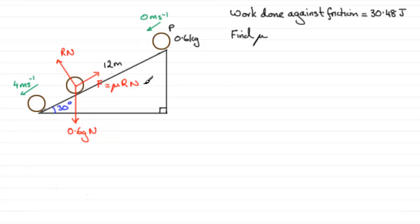So essentially what we're going to do, just to give you an overview here so that you might want to pause the video and carry on with the problem, but essentially what we're going to look at is that the work done by the friction here is going to be the force times the distance, μR times the distance here, 12 meters, and I'm going to equate that work done with the 30.48 and you should be able to find out what μ is.